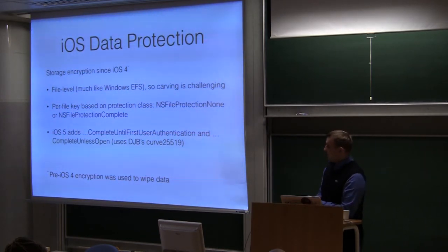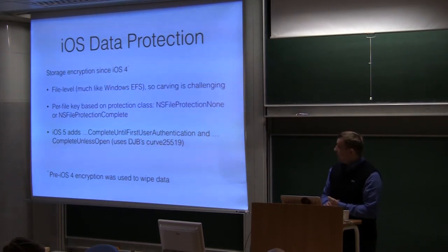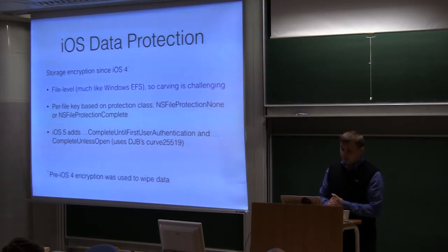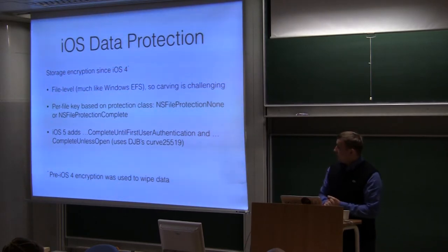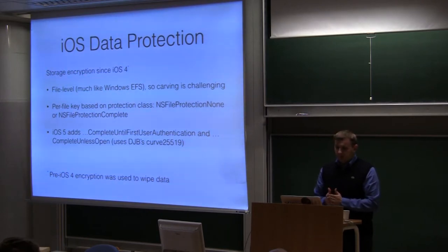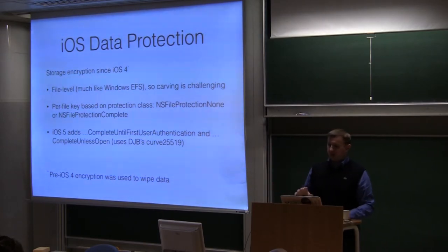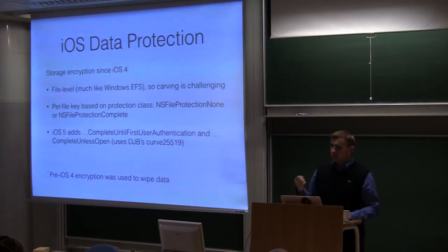The protection class is the same as the accessibility class for keychain items. With iOS 4, there were only two classes: File Protection None — the file is encrypted but accessible at all times even when locked — and File Protection Complete, where files could only be opened when the device is unlocked. This was enforced cryptographically: if the device is locked, there is simply no encryption key available to decrypt that file.